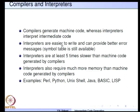Interpreters are much easier to write and can provide better error messages than a compiler, because the optimization and machine code generation phase is absent in an interpreter. The symbol table is still available to an interpreter, and therefore error messages are easier to provide and better error messages can also be provided.